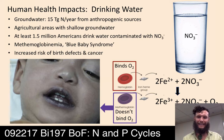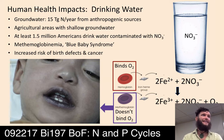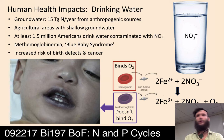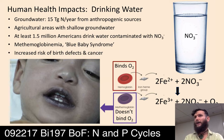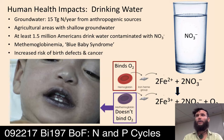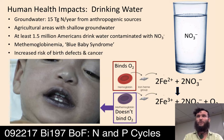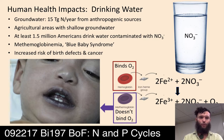When nitrate binds to hemoglobin, it oxidizes the iron from Fe²⁺ to Fe³⁺. When this happens, the iron does not want to bind oxygen — it will not bind oxygen. There's also a color change: Fe²⁺ is what gives your blood its red color. When the oxidation state is changed by nitrate, which is an oxidizing agent, the iron can no longer transport oxygen, and we get blue baby syndrome.